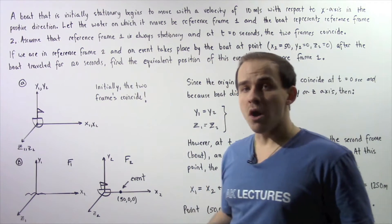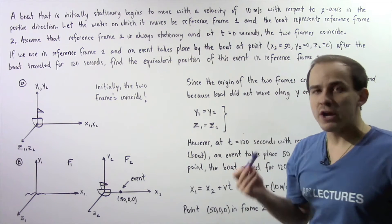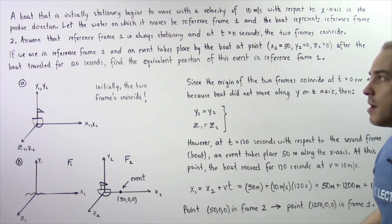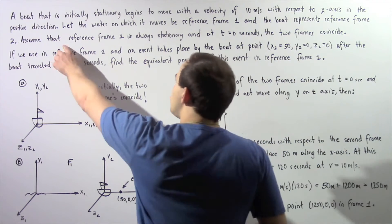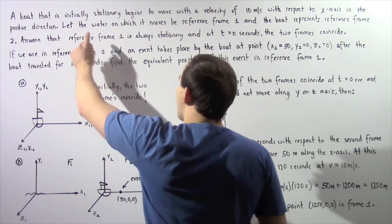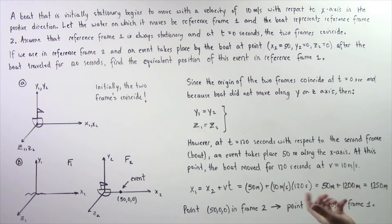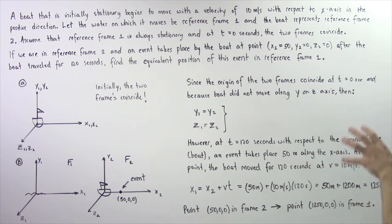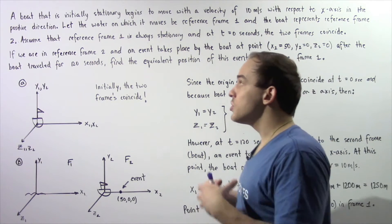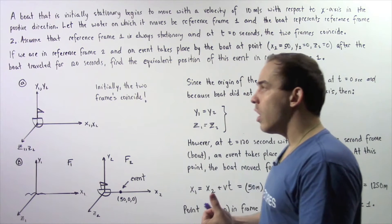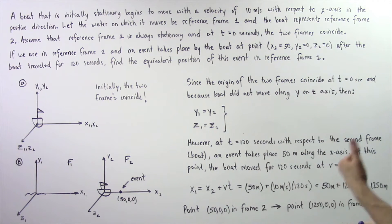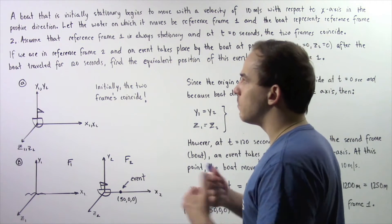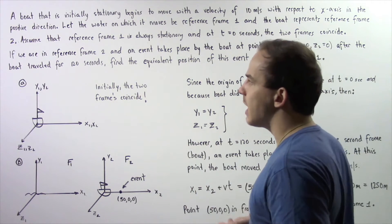Let the water on which the boat moves be reference frame number one, and the boat itself be reference frame number two. Assume that reference frame number one, the water, is always stationary, and at a time of zero seconds the two frames exactly coincide. So the origin of frame number one lies at the origin of frame number two, where frame two is the boat and frame one is the water.